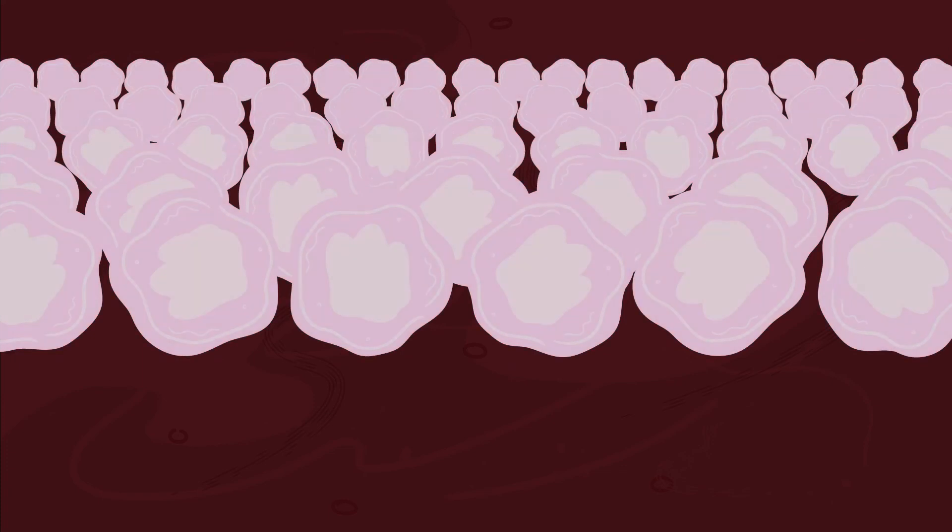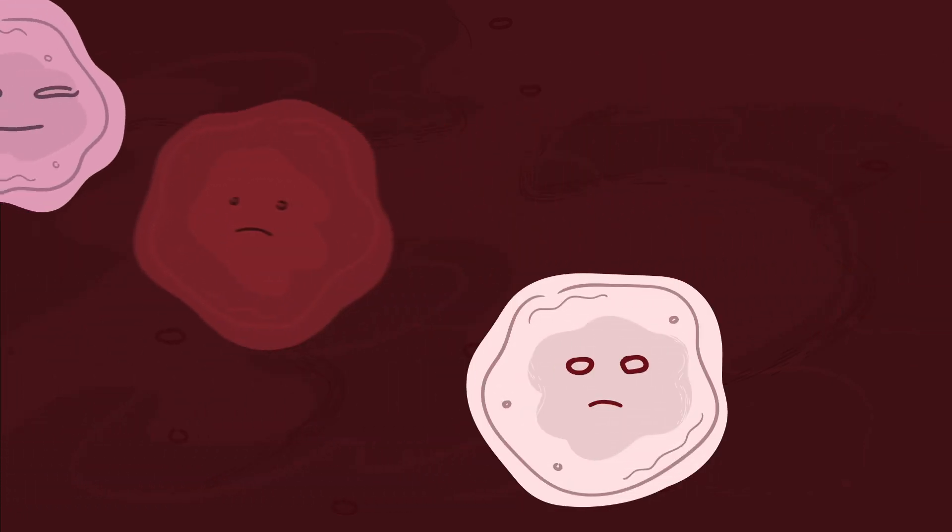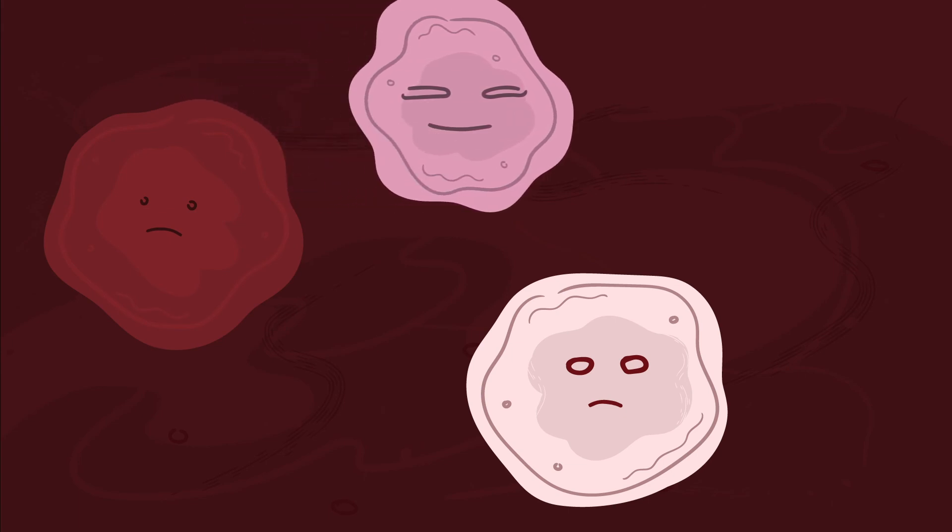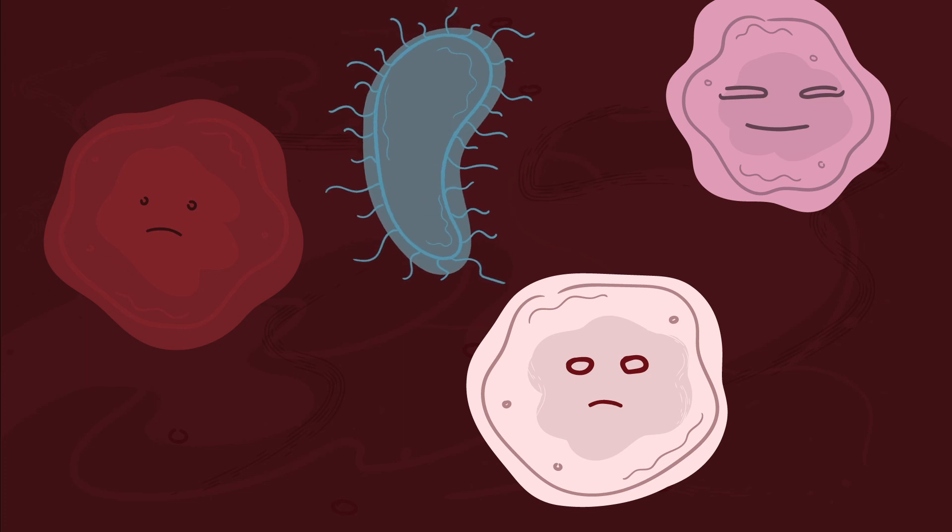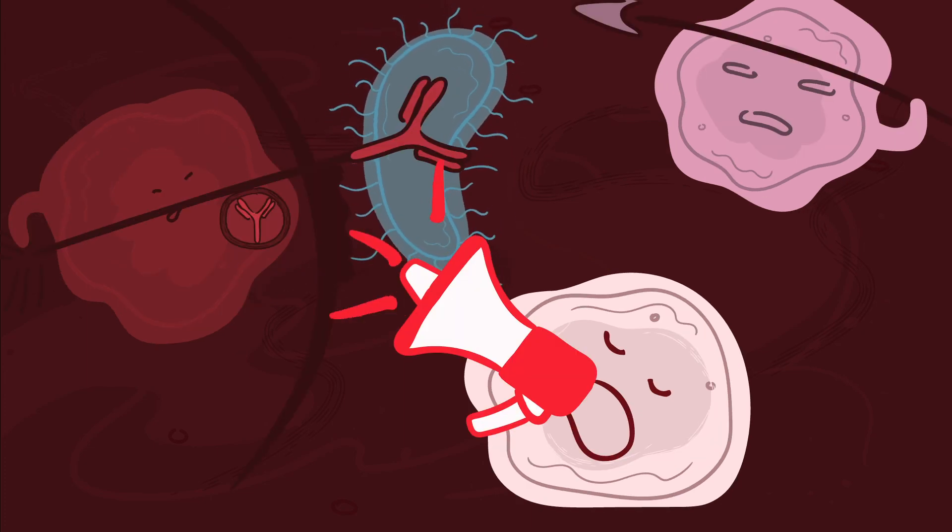Many B-cells and T-cells die off after an infection is cleared, but some of them stay around to produce lasting immunity. Memory B-cells and T-cells linger in the body so that next time that antigen shows up, the body is already primed to respond.